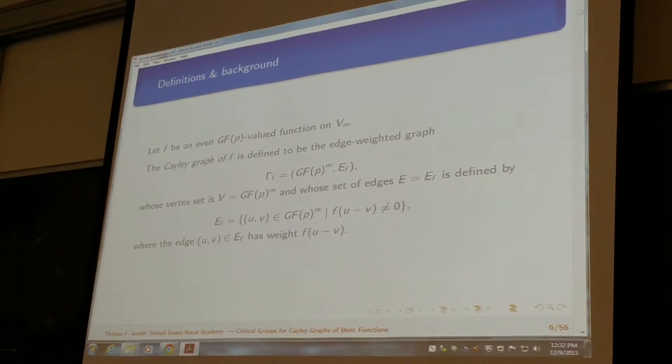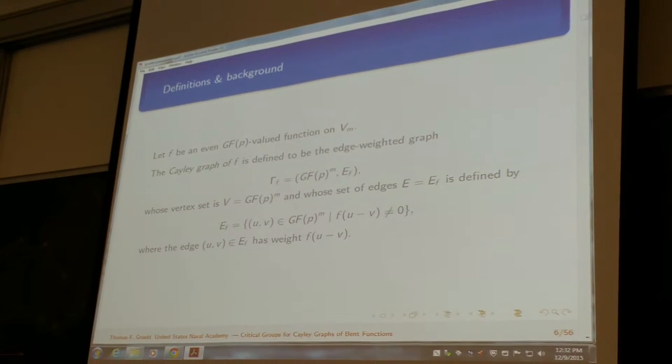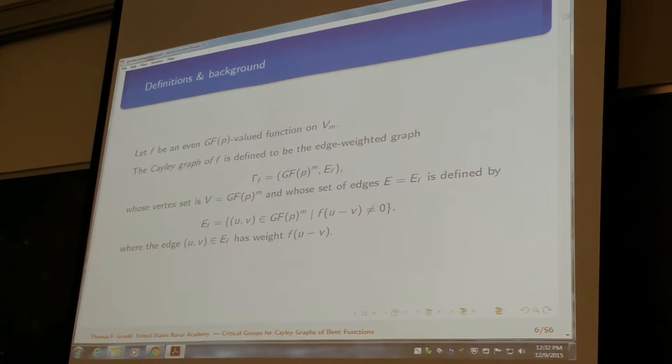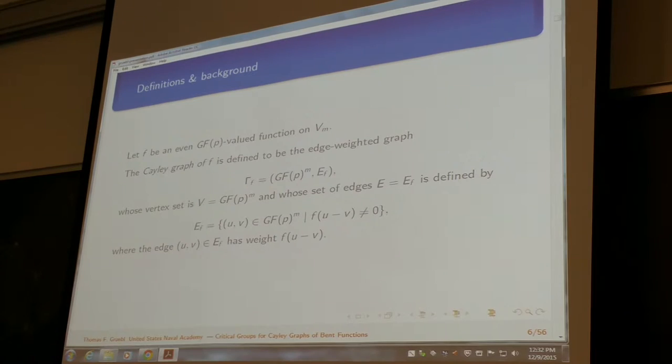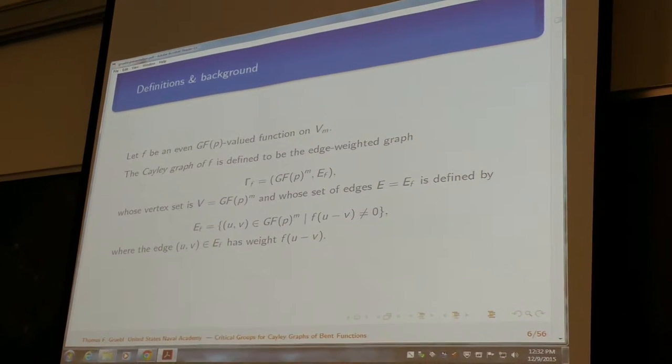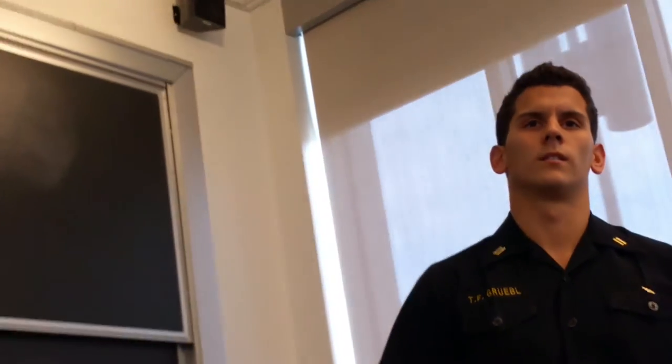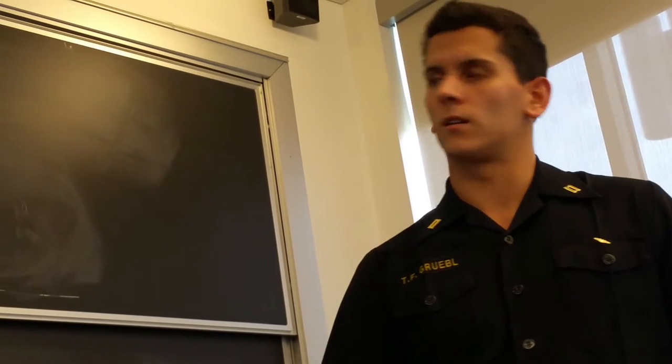When you talk about p-ary, do you allow p equal to 2 or is that some whole separate thing? I do allow p equal to 2. We just call that the Boolean case and I was working specifically with p equal to 3. So when you say a function is even, if it's in the binary case, is any function even or no functions are even or something strange in there? I know there is something strange about it. I just can't - we talked about it a little bit in the beginning of the semester. I'm not exactly sure what the anomaly was there. I guess negative 1 is equal to 1, so probably everything is even.